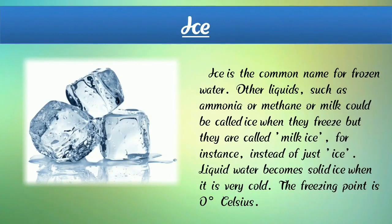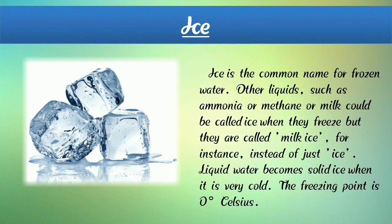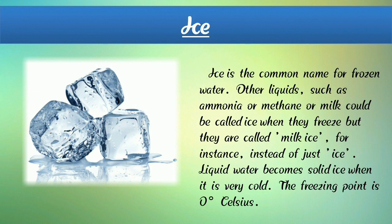Next, ice — I-C-E. Here we can see a photograph of ice. Ice is made up of water and it is very cold. Ice is the common name for frozen water. Other liquids such as ammonia, methane, or milk could also be called ice when they freeze — for instance, milk ice instead of just ice. Liquid water becomes ice when it is very cold, and the freezing point is zero degrees Celsius.